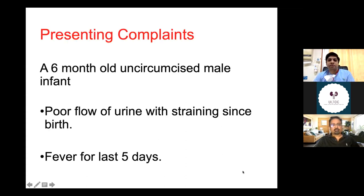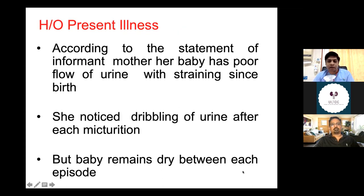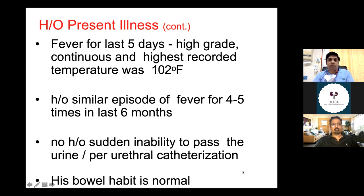I am presenting a six-month-old uncircumcised male infant who presented with overflow of urine with straining since birth, and with history of fever for the last five days. According to the informant — the mother — the baby has been having overflow of urine with straining since birth. She notices dribbling of urine after each micturition, and the baby remains dry between each episode. The child also has high-grade continuous fever for five days, with the highest recorded temperature of 102 degrees Fahrenheit.